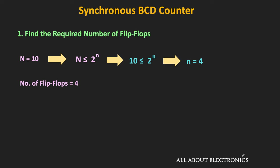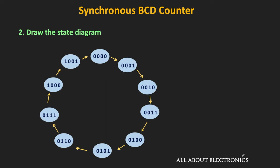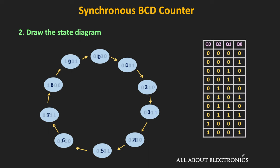The second step is to draw the state diagram, which shows the counting sequence and the next state for each present state. Since it is a BCD counter, it will count from 0000 to 1001, or in decimal from 0 to 9. Since we have 4 flip-flops, it can count from 0 to 15, so the remaining 6 combinations — from 1010 to 1111 — are the don't care terms.